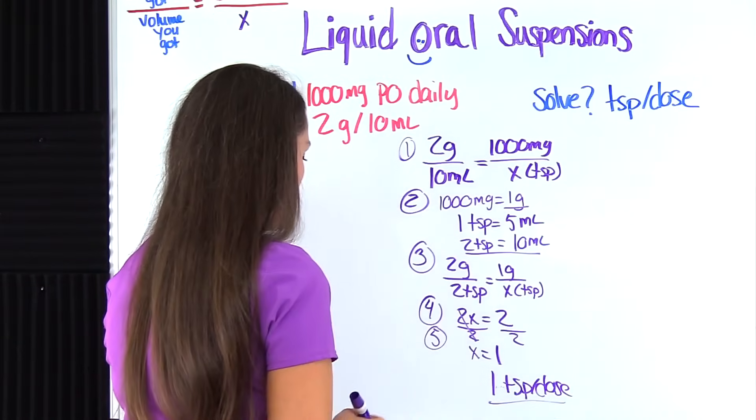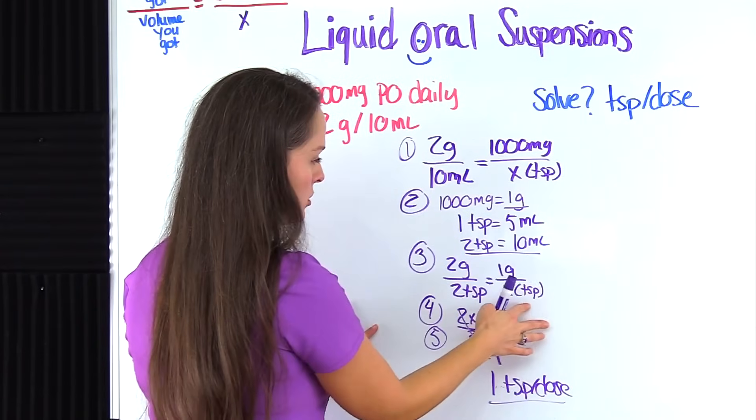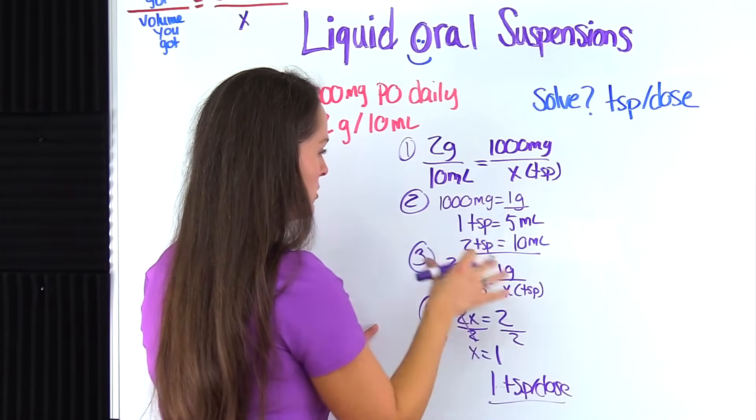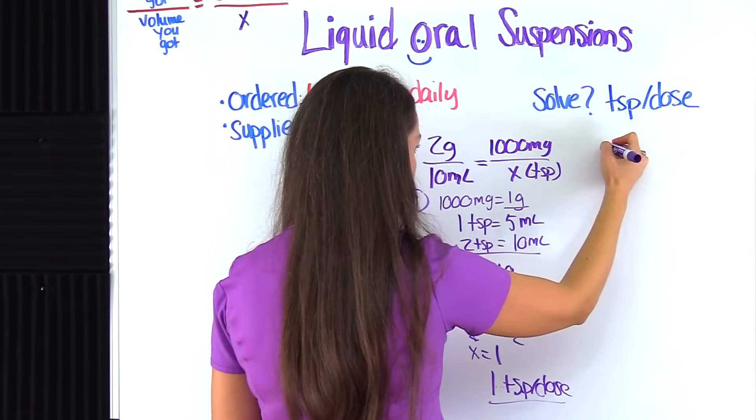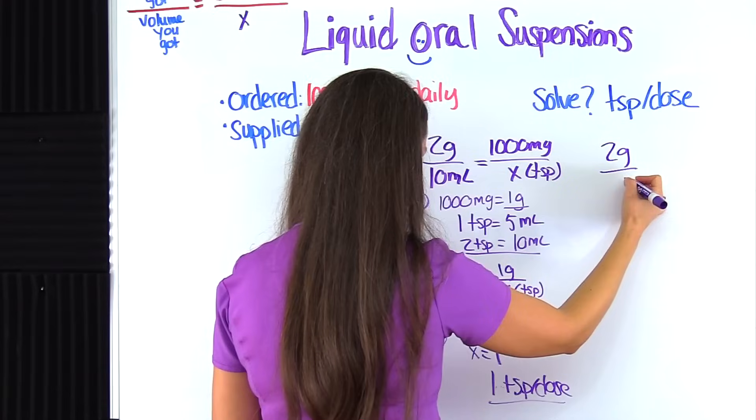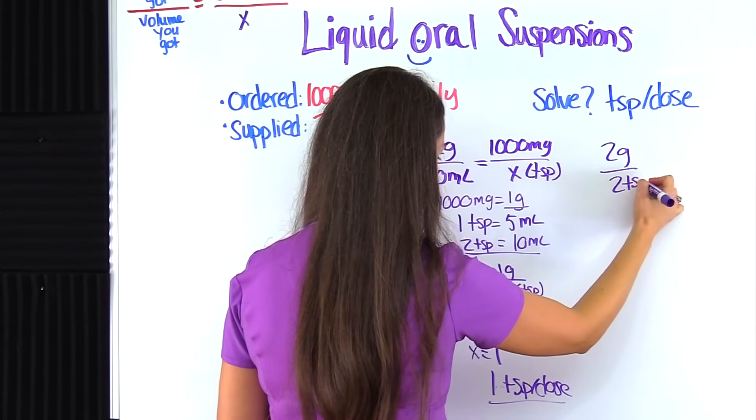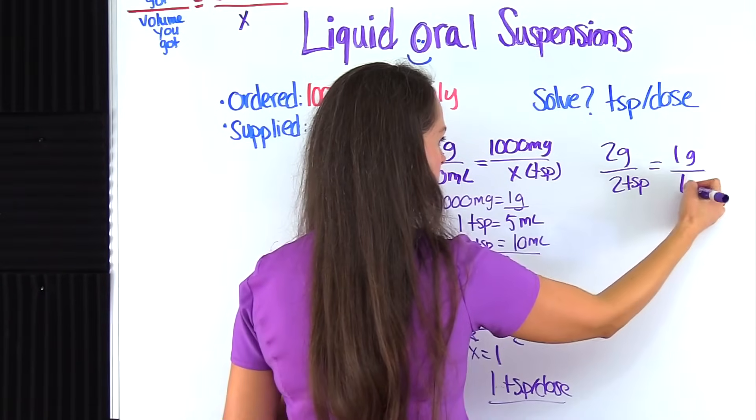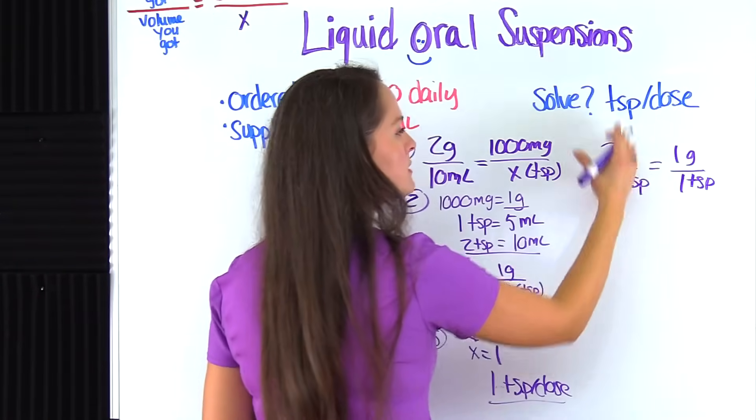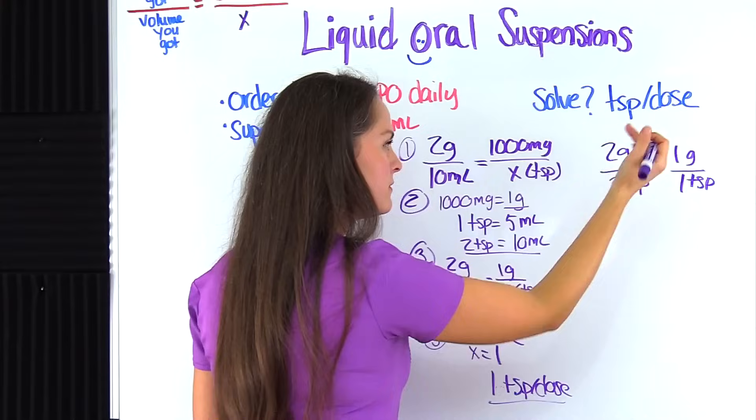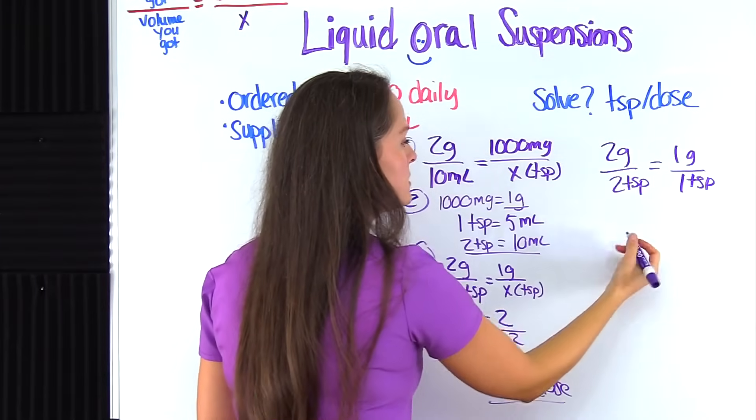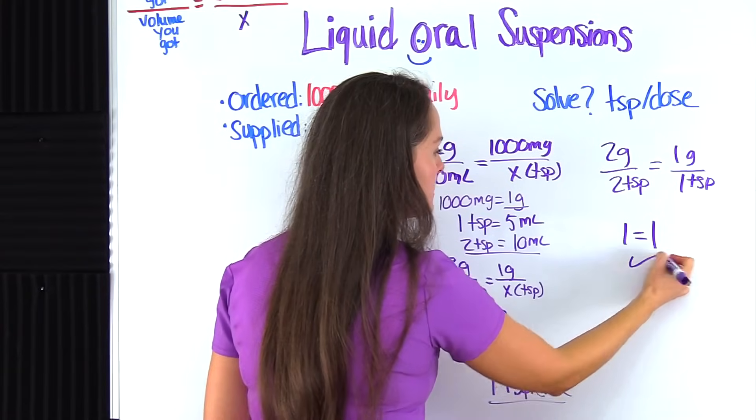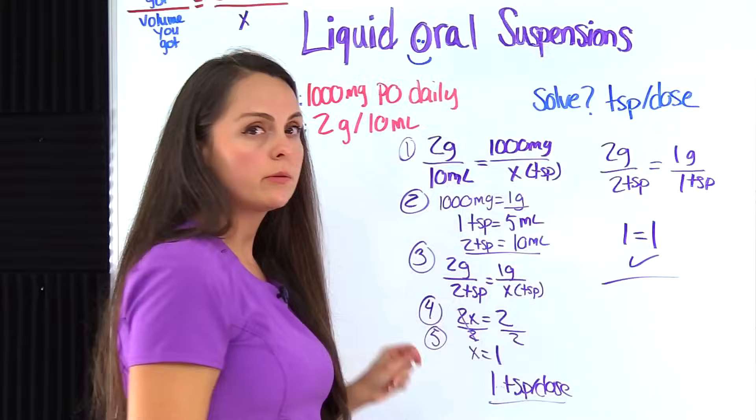So let's just go quickly check that out by plugging it into our nice and converted ratios that we made. So we are going to do 2 grams over 2 teaspoons equals one gram over what we say we got—we got one teaspoon. So divide everything on this side, divide everything on this side, and see if it really is equal. So 2 divided by 2 equals 1. 1 divided by 1 equals 1. And that is correct. So our answer is one teaspoon per dose.